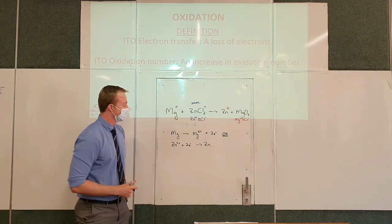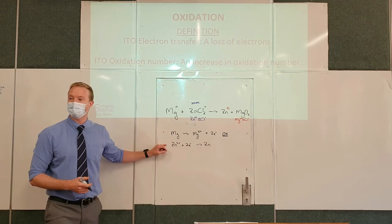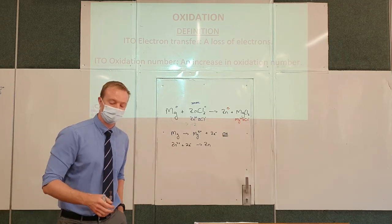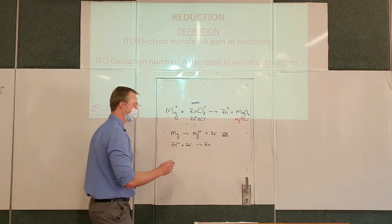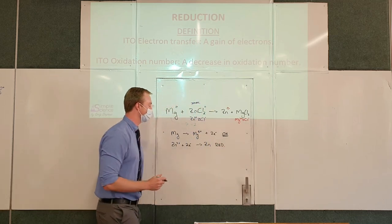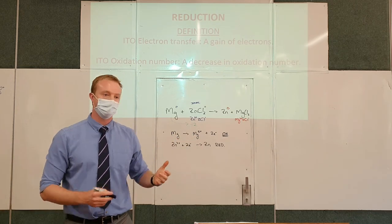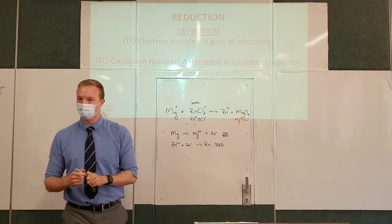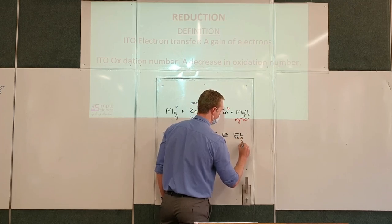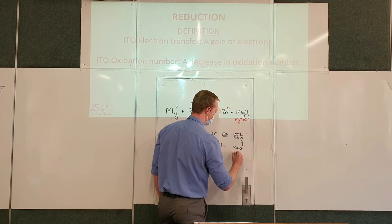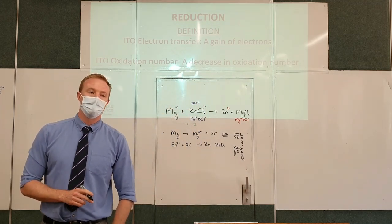Zinc represents the other half reaction — a reduction half reaction, defined as a gain of electrons. So magnesium is oxidized while zinc is reduced. Together, these are called redox reactions, because reduction and oxidation must happen together. An easy way to remember this is with the mnemonic OIL RIG: Oxidation Is Loss, Reduction Is Gain.